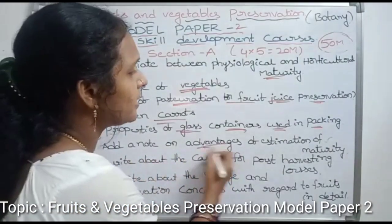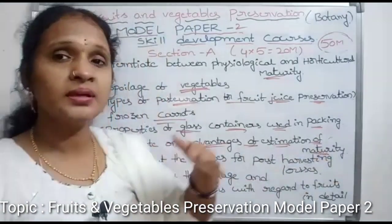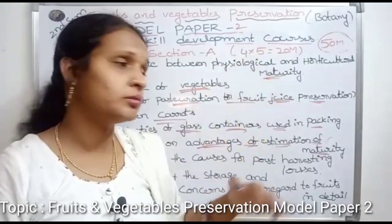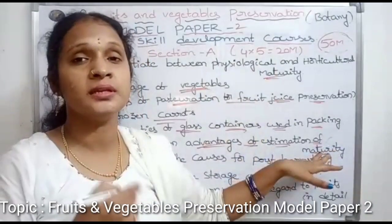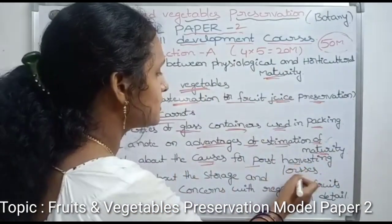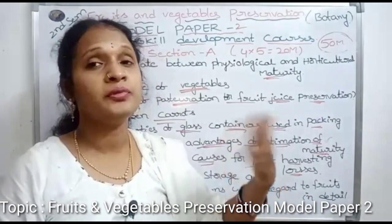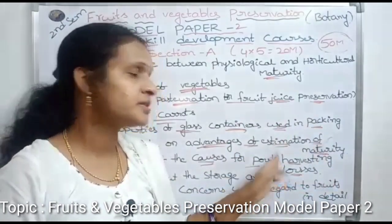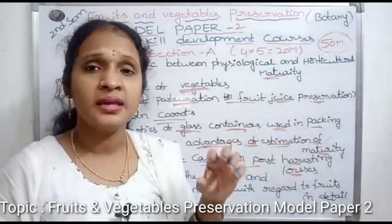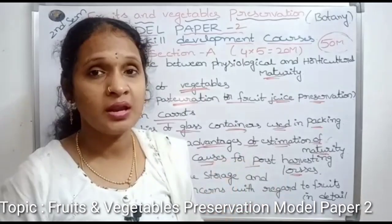Sixth question: add a note on the advantages of estimation of maturity — what is the development of the plant? Seventh question: write about the causes for post-harvest losses. We need to understand what happens to our plants before harvesting and after harvesting, and how we need to store them at a low temperature to reduce losses.